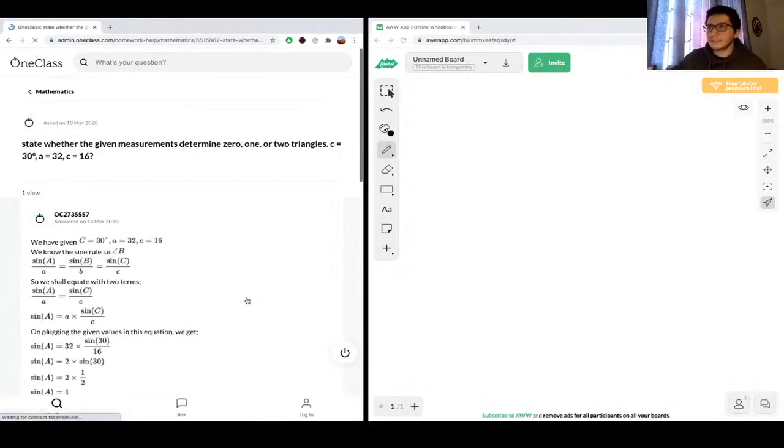Okay, so the next question we are asked here is state whether the given measurements determine zero, one, or two triangles. So it's giving us some values, and we have to determine how many triangles these values represent. So the first value we're given is C, and this is an angle, so we'll say capital C is equal to 30 degrees.